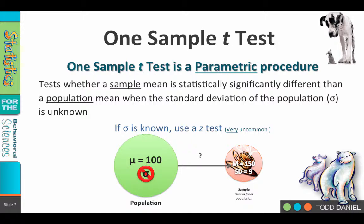If we know sigma, the standard deviation of the population, we can use a z-test. However, this is very uncommon, and most of the time we estimate the population standard deviation from the sample standard deviation. This changes the nature of the test, and instead of using a z-test, we use a t-test.